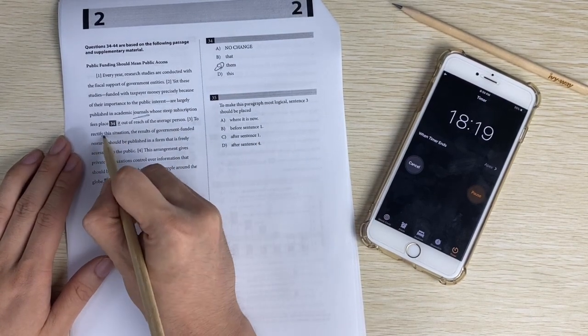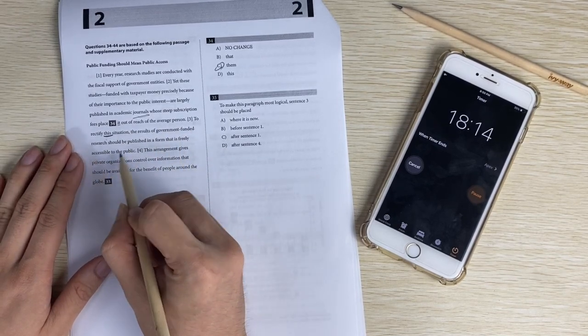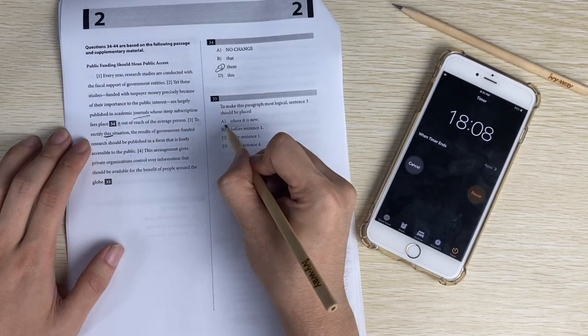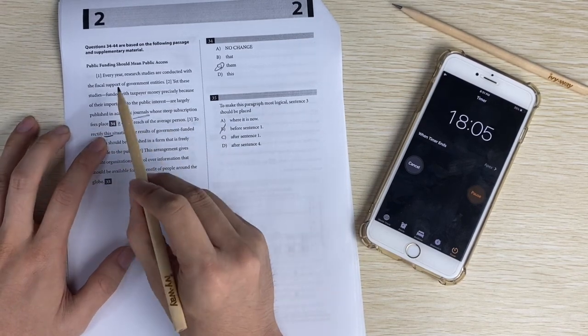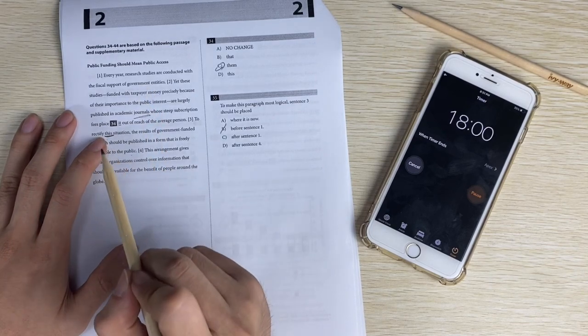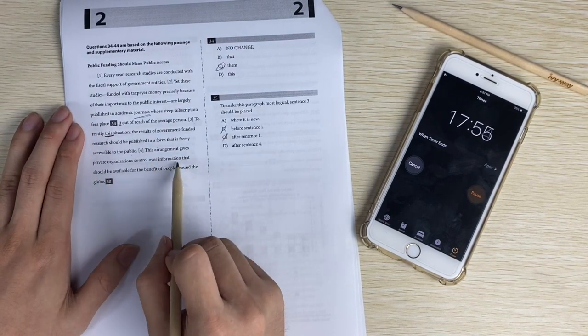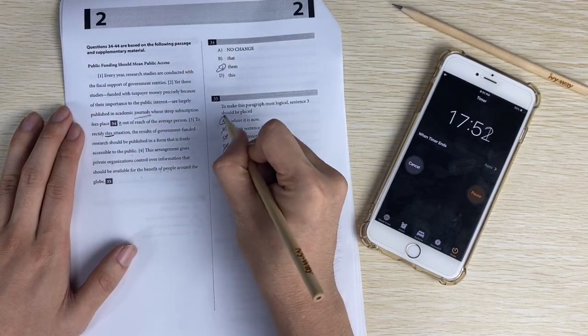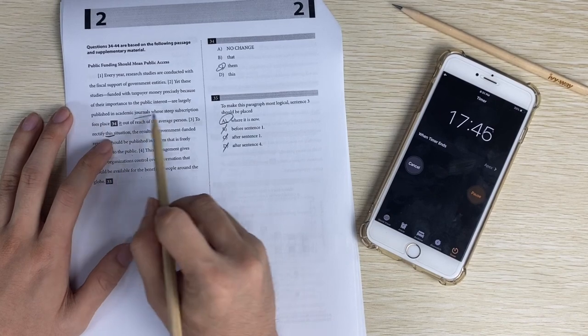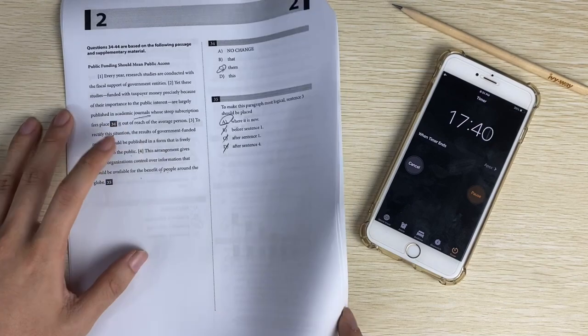Now paragraph more logical, sentence three. To rectify this situation, keyword, the results should be published, is freely accessible to the public. Let's see. Before sentence one can't be right because there's nothing about this situation. After sentence one - every year research studies are conducted with the fiscal support of government entities. That's not a situation to be rectified. After sentence four, this arrangement gives private - should be available in benefit. That's also not a problem. So the answer is A. And the previous sentence should be a problem. Yet these studies are published whose steep subscription fee pays the outer reach of average person. So the next sentence solves the problem.